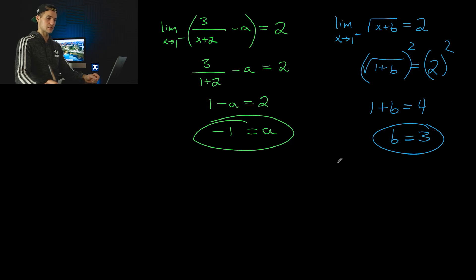So the two solutions are a equals negative 1 and b equals 3. If you plug those back into the original piecewise function and graph it, you'd see that the function is continuous at x equals 1 because all three pieces have a y value of 2 at that point.